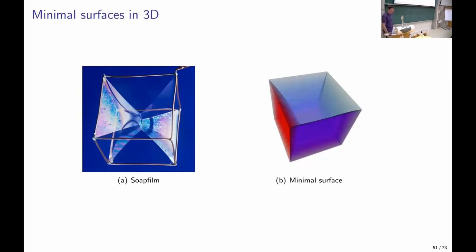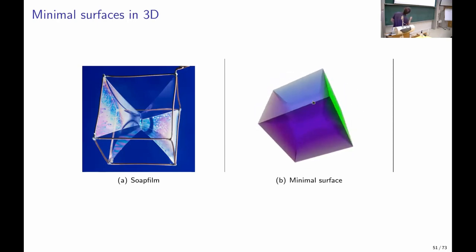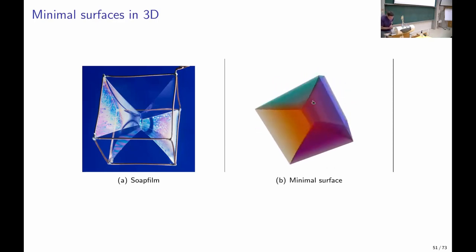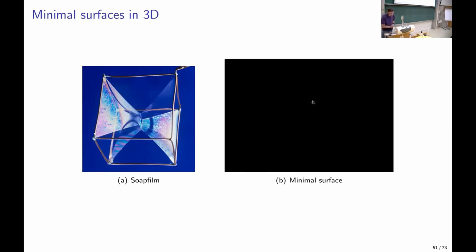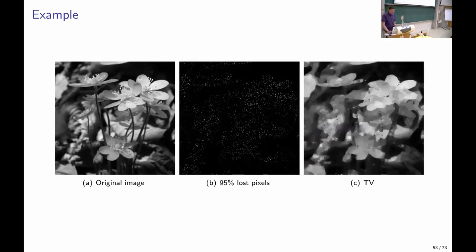In 3D, minimizing the Potts model means minimizing surface area — analogous to soap bubble films, which naturally minimize surface area. When you put a wire frame into soap water, the resulting minimal surface has a small strain in the middle, as can be proven analytically. Our computational approach recovers exactly the same solution that nature gives us with soap bubbles — a beautiful geometric confirmation of the approach.